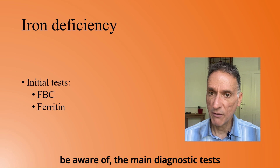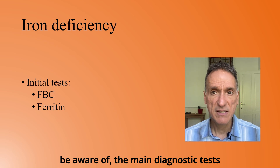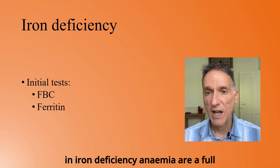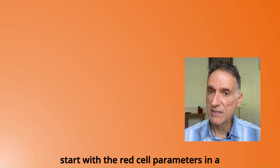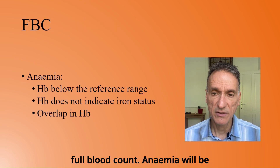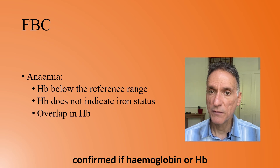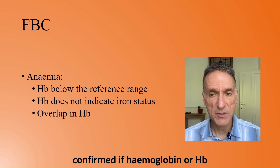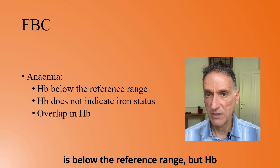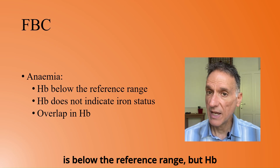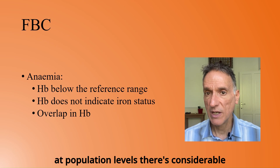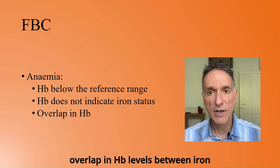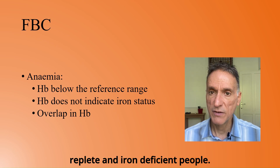The main diagnostic tests in iron deficiency anaemia are a full blood count and ferritin. Anaemia will be confirmed if haemoglobin is below the reference range, but Hb alone does not indicate iron status. At population levels, there's considerable overlap in Hb levels between iron replete and iron deficient people.